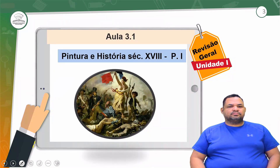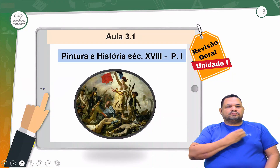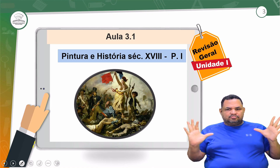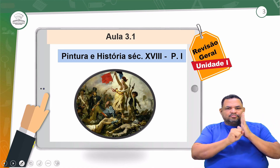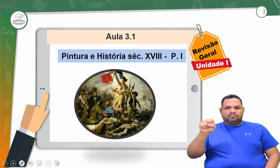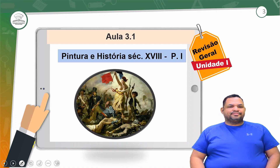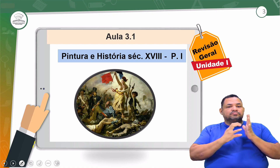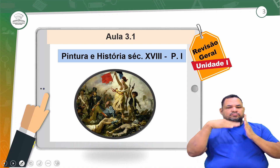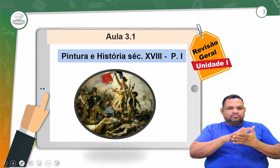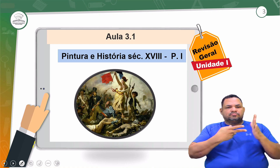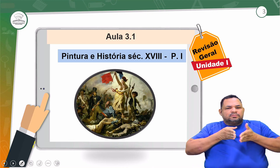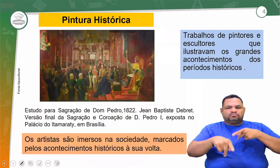O que de mais importante foi visto na aula 3.1? A pintura e a história se unem no século XVIII. Você está vendo esse quadro aqui, que é uma espécie de símbolo — uma pintura que tem várias conotações, porque vem da Revolução e da liberdade, guiando o povo.